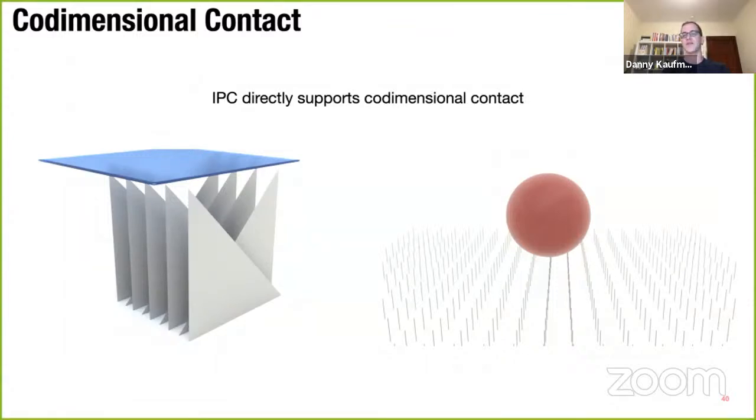And so another important thing that IPC gives us is along with guaranteed feasibility and stability, IPC also handles contact between both volumetric and pretty much all co-dimensional objects. In fact, all co-dimensional objects. There's no qualification there. And so as far as I know, this is pretty much impossible in existing codes that are available.